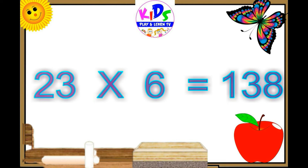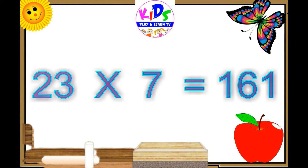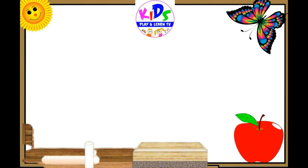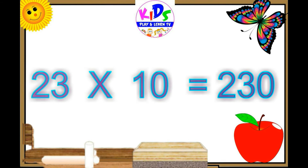23 sixes are 138, 23 sevens are 161, 23 eights are 184, 23 nines are 207, 23 tens are 230.